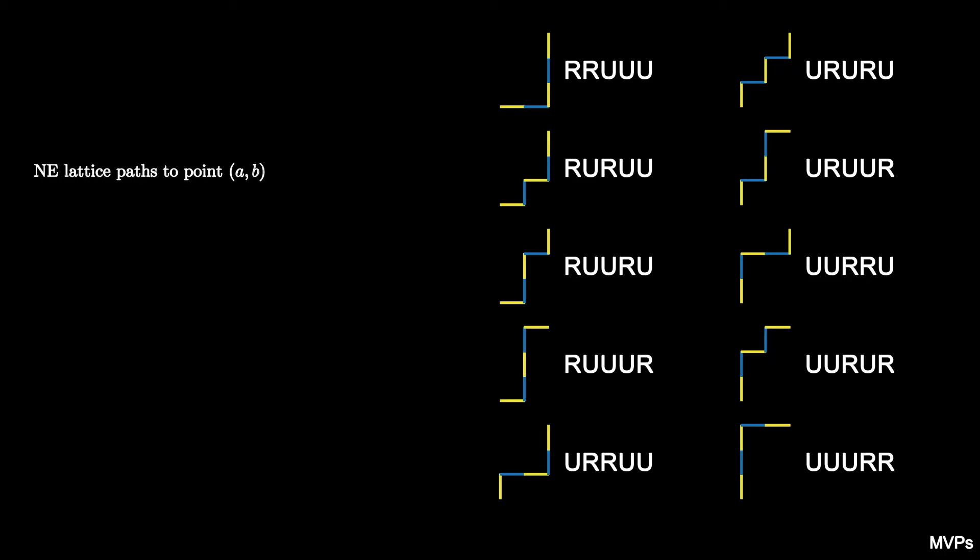A consequence of this encoding is that the northeast lattice paths to (a,b) correspond to strings of R's and U's with a R's and b U's.